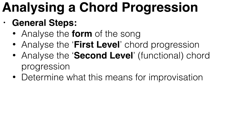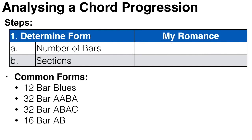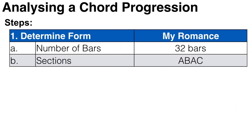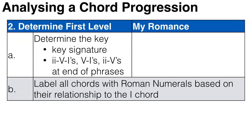First you look at the overall form of the song: the number of bars and the number of sections. In jazz, common forms include the 12-bar blues, the 32-bar AABA, the 32-bar ABAC, and the 16-bar AB. Looking at 'My Romance,' we see it's 32 bars long and follows an ABAC form.